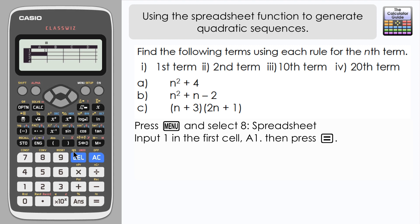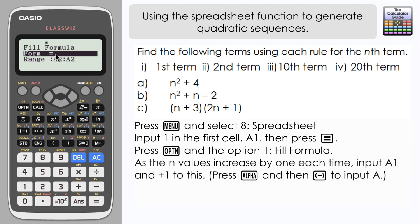In order to access the options, just press option and then we want option 1 which is fill formula. We've got two different criteria that we need to fill in. We're going to write the formula here on the top line. Notice how similar to Microsoft Excel, the formula starts with an equal sign. Now with n values, well they go up in one each time, so the next value is 2, then 3, then 4. So that's just literally the first term which I will reference as the term that is in cell A1 plus 1.